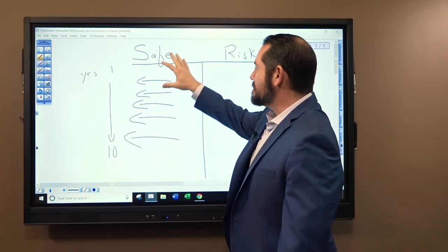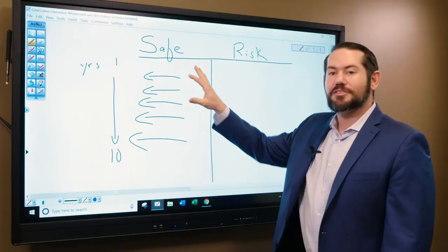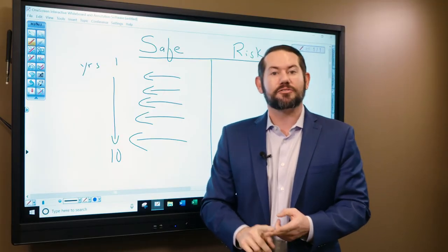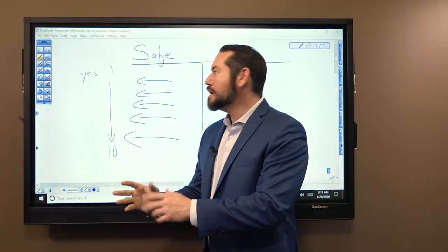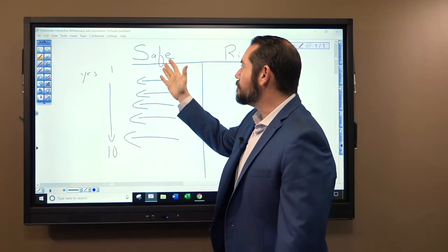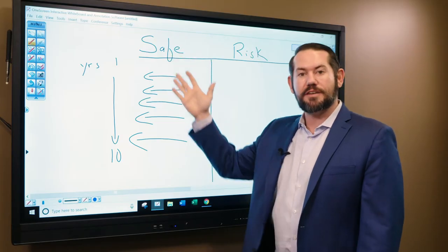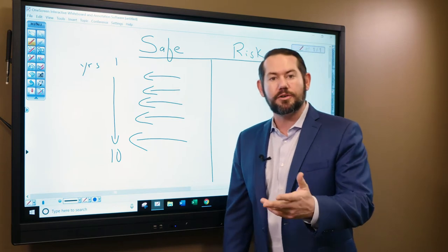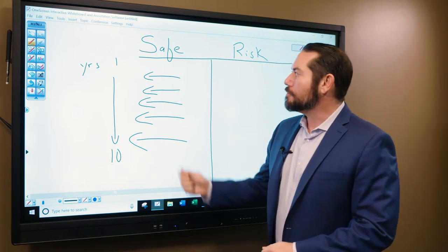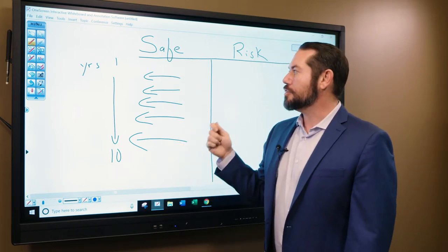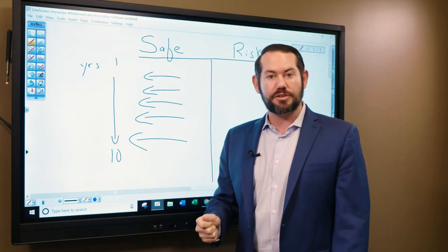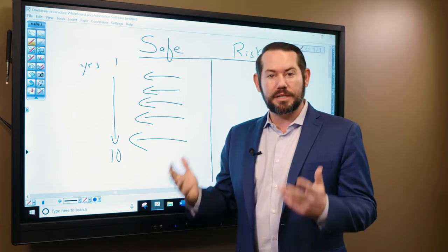First we have the safe bucket. Now, safe bucket is not securities. This is not stocks. This is not bonds. Those investments have risk. Here, we're talking about, I prefer the fixed indexed annuity for the safe bucket. But you could use CDs as well. They're not quite as efficient. But I prefer the fixed indexed annuity because this tool gives you the most downside protection with the greatest upside potential.